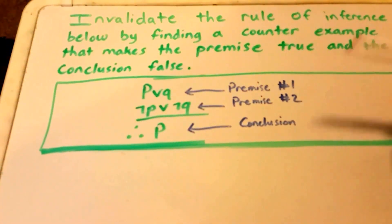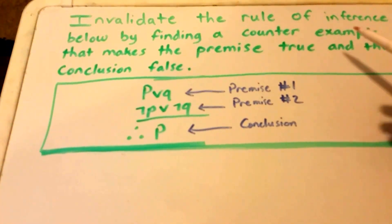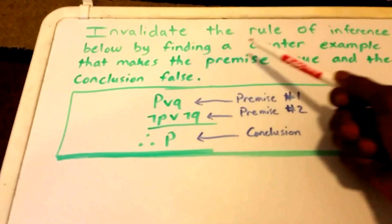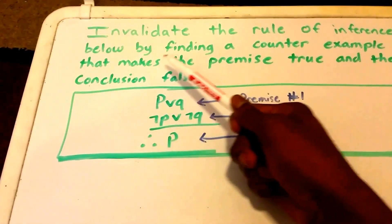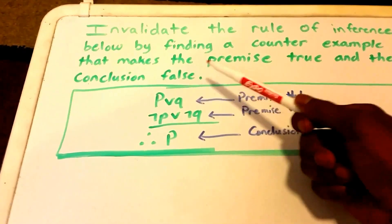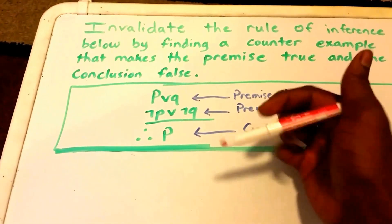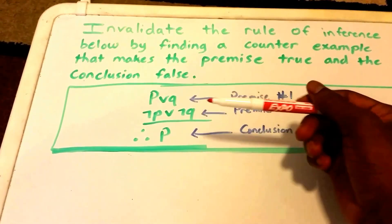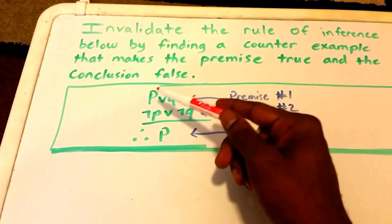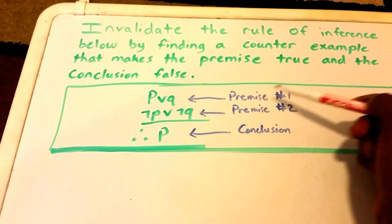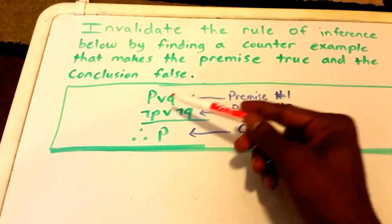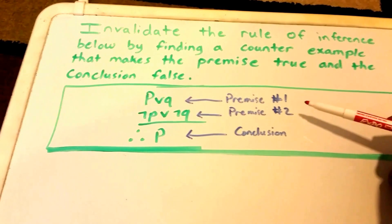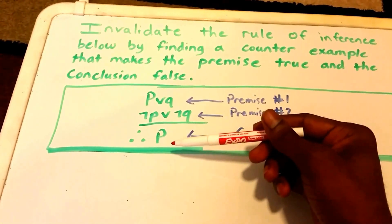Hey guys, so this is a video on rule of inference. Here we have the problem. We want to invalidate the rule of inference below by finding a counterexample that makes the premise true and the conclusion false. We can read the rule of inference like this: if P or Q is true, which is premise one, and not P or not Q, which is premise two, is also true, then we can conclude P.